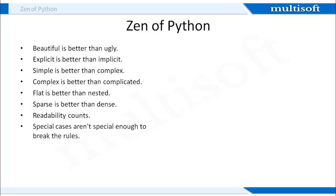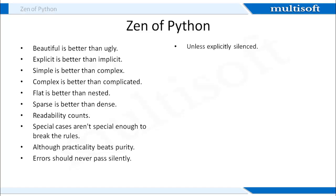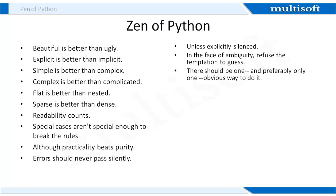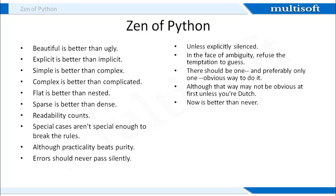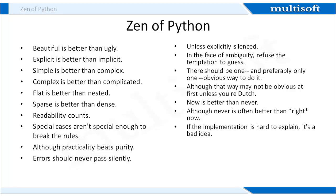Special cases aren't special enough to break the rules, although practicality beats purity. Errors should never pass silently, unless explicitly silenced. In the face of ambiguity, refuse the temptation to guess. There should be one and preferably only one obvious way to do it, although that way may not be obvious at first unless you are Dutch. Now is better than never, although never is often better than right now. If the implementation is hard to explain, it's a bad idea.